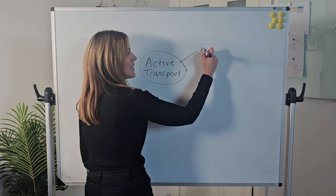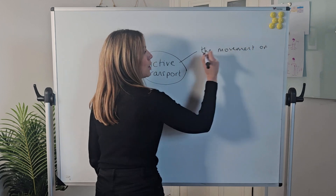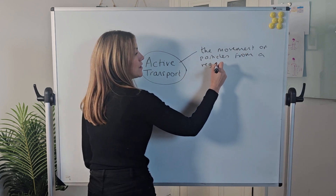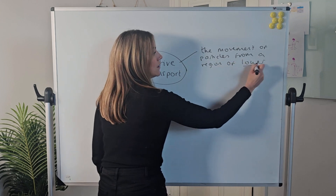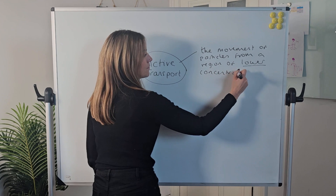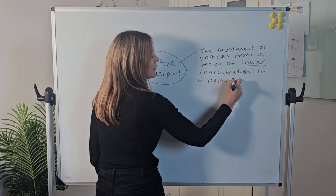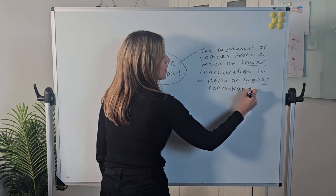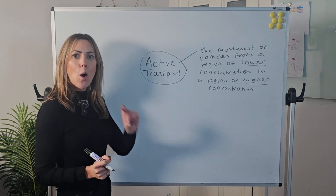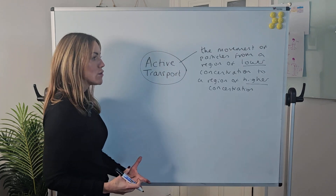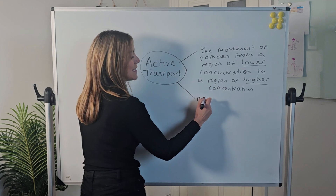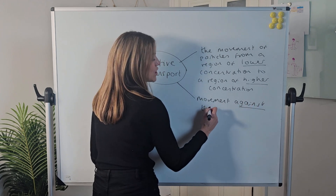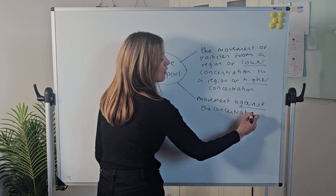Active transport is the movement of particles from a region of lower concentration to a region of higher concentration. Those key words, lower to higher, remind us it's the opposite of diffusion or osmosis — it's movement against the concentration gradient rather than down the concentration gradient.